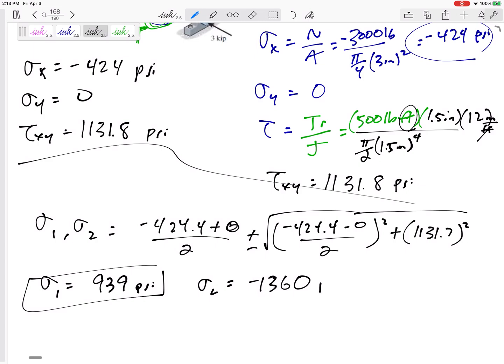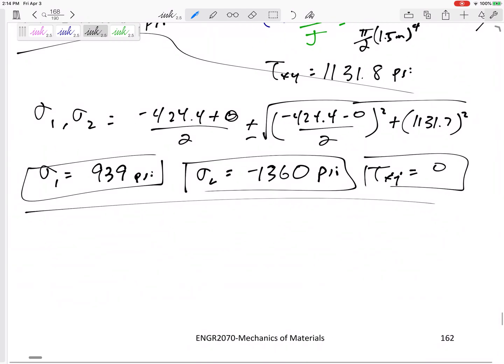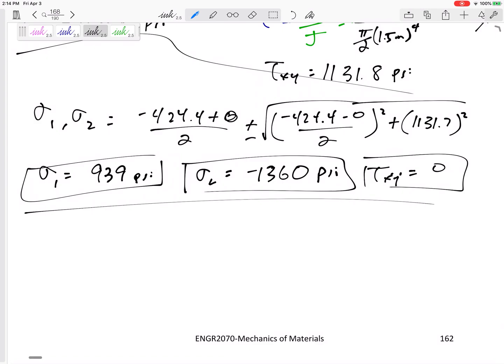What's the tau at this orientation? Zero. At my principal plane, my shear stress is zero. My tau max is that value right there. So if I was careful, I would have calculated this a little bit better. This would be 212.2 plus and minus...